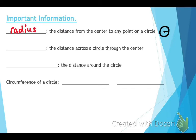The next one says this is the distance across the circle through the center. Here's the center, it goes all the way across. What's that called? The diameter. Look carefully at how it's spelled.